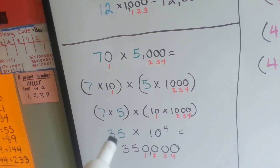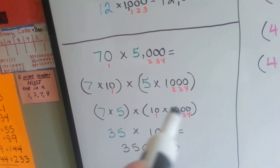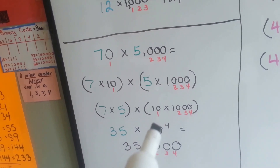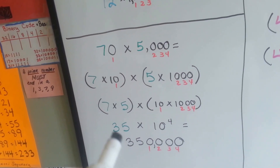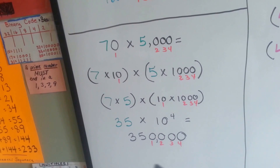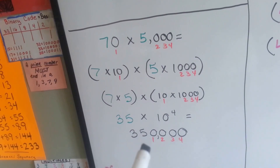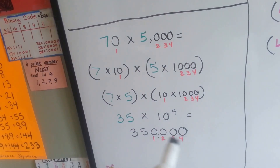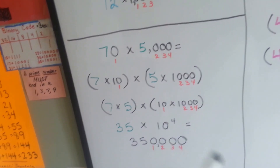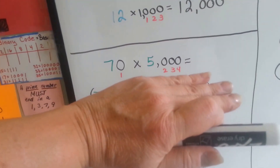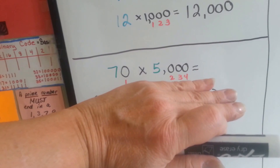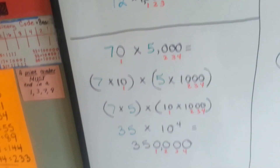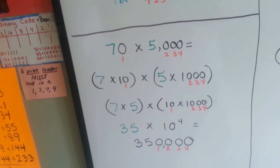7 times 5 is 35, and when we put this into a power of 10, we get 10 to the fourth power. 35 times 10 to the fourth power is 350,000 — and look, there's 4 zeros. We could have just said 7 times 5 is 35 with 4 zeros, written it down and put our commas in. Isn't that amazing?